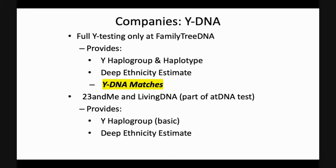Switching over to 23andMe and also LivingDNA: as part of their autosomal DNA test, they will provide your Y-haplogroup — that is, if you have a Y-chromosome, they'll say it is this haplogroup — as well as your deep ethnicity estimate on that Y line, or your direct paternal line, or your patrilineal line. We have at least three different terms to describe that father's father's father's line.